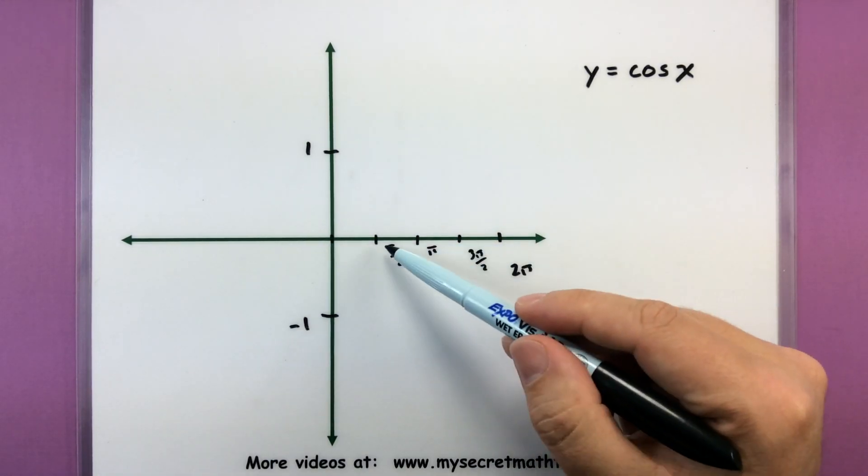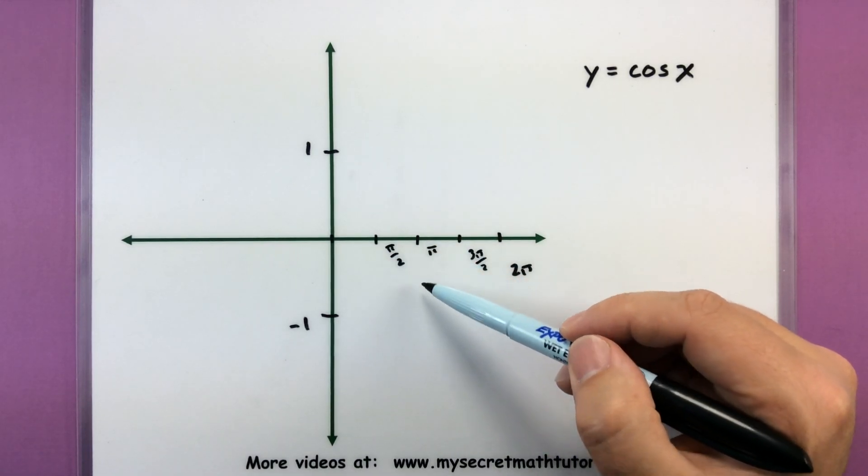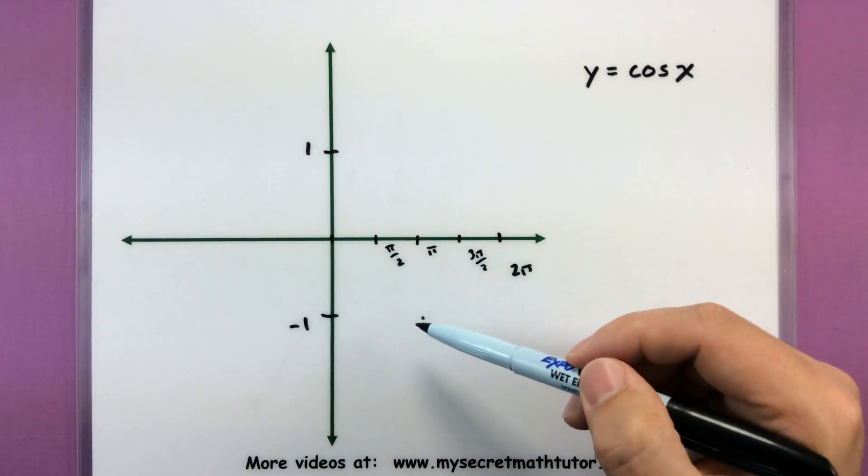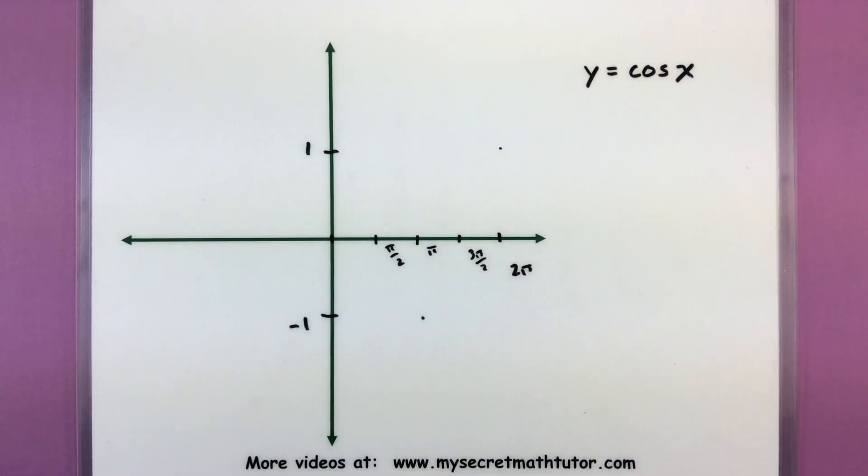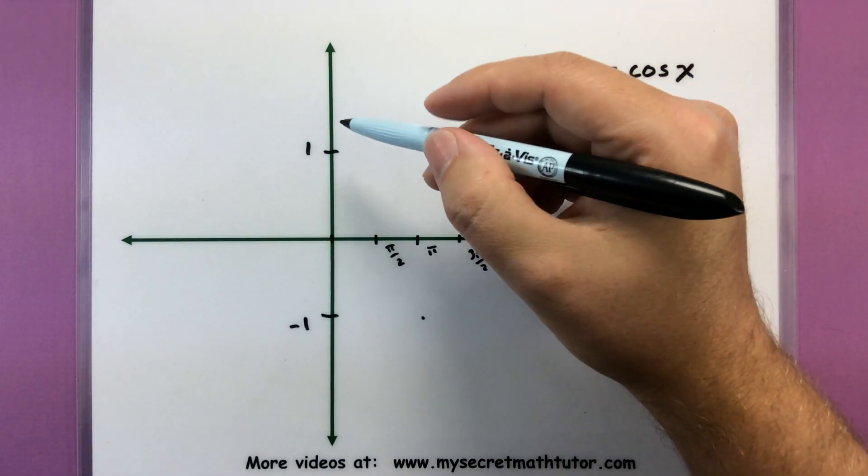It's at these places where we will actually cross the x-axis. When we get to the halfway point, we'll be at negative 1. When we're at 2 pi, we'll be all the way up here at 1. Alright, so let's draw it out.